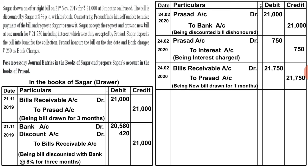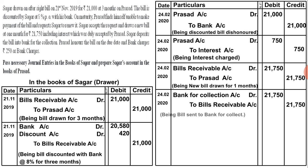When the drawer doesn't have time, he gives the bill to the bank for collection. The bank holds the bill and on maturity collects the amount from the drawee. Entry on 24th February when bill is sent: Bank for Collection Account debit to Bills Receivable Account ₹21,750 — being bill sent to bank for collection. Note: in discounting, bank gives immediate cash; in collection, bank only collects on maturity.